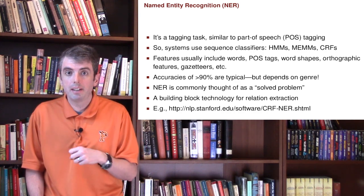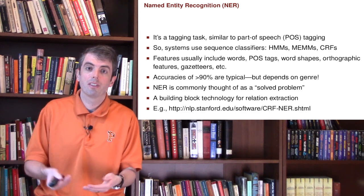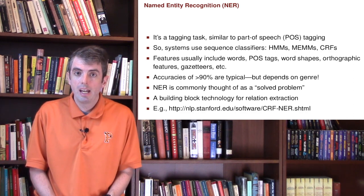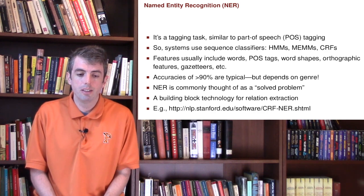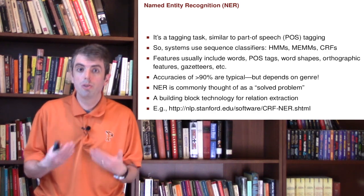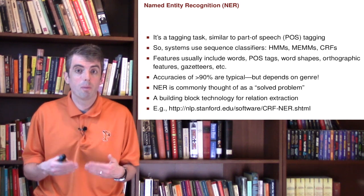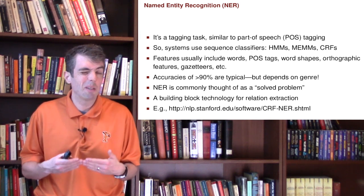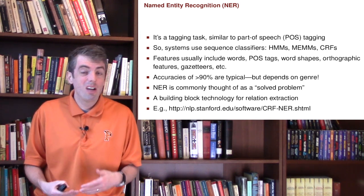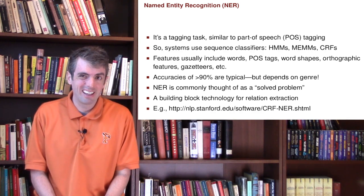After you've done named entity recognition, you can go on and do the information extraction tasks that you would like to do, and there's good software that you can use. However, once you get away from newswire — where you have training data for this task — the performance gets quite a bit worse. So if you're trying to apply this to Twitter, don't expect 90% accuracy.